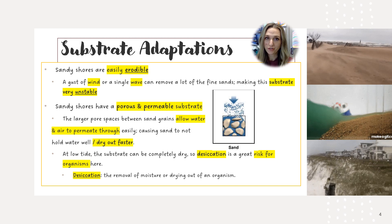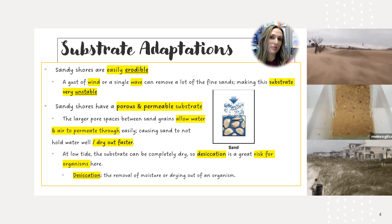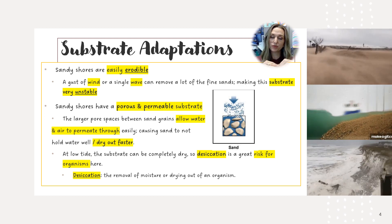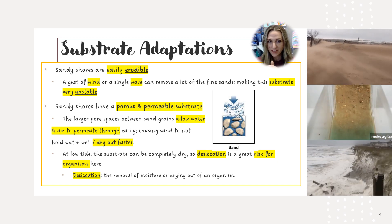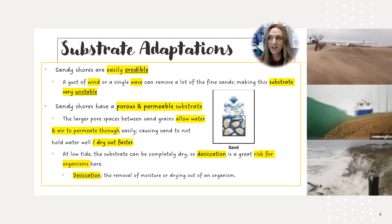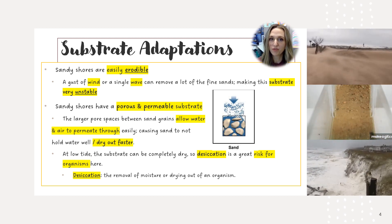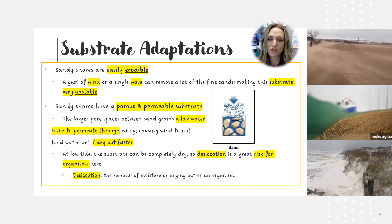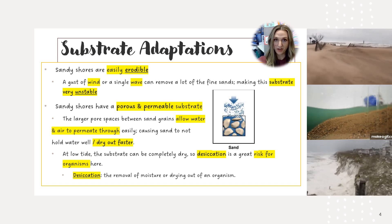Sandy shores are also very porous and have a lot of permeability. Permeability means that things can permeate or seep through the sediment. There are larger pore spaces between the sand grains, so despite sand seeming very fine to us, in terms of air or water movement — which involve much smaller molecules — those pore spaces are actually relatively large, allowing water and air to flow through very easily.